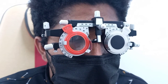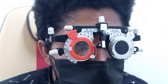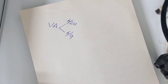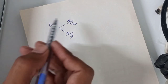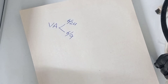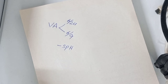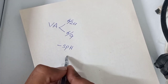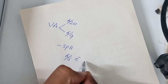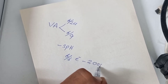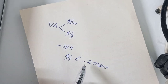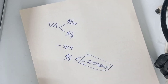When the patient achieves maximum visual acuity, that minus lens will be our best vision sphere. For example: the unaided visual acuity in the right eye was 6/24, the patient preferred minus spherical lenses, and after increasing the minus power, the visual acuity reached 6/6 with minus 2.00 spherical. That minus 2.00 DS is the best vision sphere.